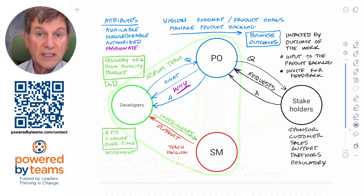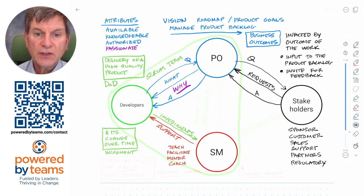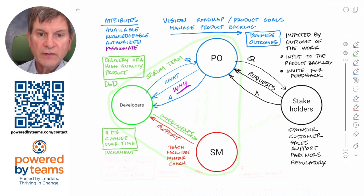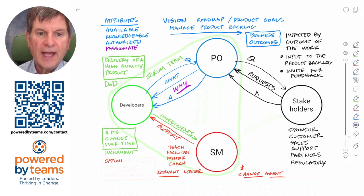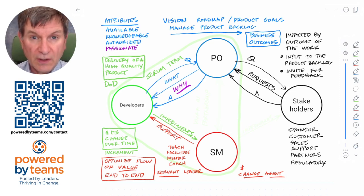The Scrum Master's role is manifold: they're there to teach — to share knowledge with groups; to facilitate — to unlock knowledge within groups; to mentor — to share their knowledge and experience with individuals; and to coach — to help unlock knowledge within individuals. They're not the master of the team, they're the master of Scrum. They are a servant leader and a change agent, there to help optimize the flow of value end-to-end, and to help the developers, the product owner, and the whole organization get better.